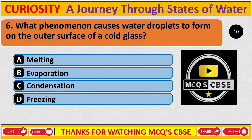What phenomenon causes water droplets to form on the outer surface of a cold glass? The correct answer is C: Condensation.